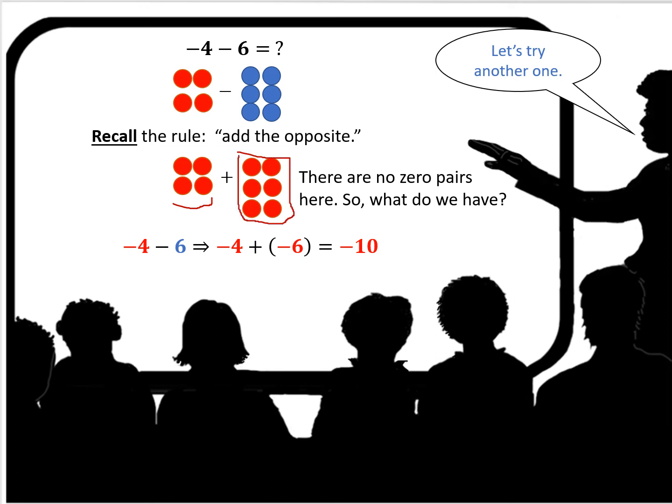I now have negative 6 chips. There are no zero pairs here though. So what do we have? Well, we have 4 negative chips plus 6 negative chips. Negative 10.